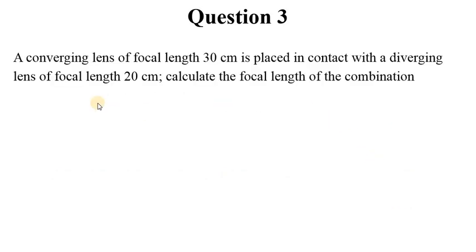Question 3: A converging lens of focal length 30 centimeters is placed in contact with a diverging lens of focal length 20 centimeters. Calculate the focal length of the combination. When dealing with optics, we have systems with several lenses combined together.